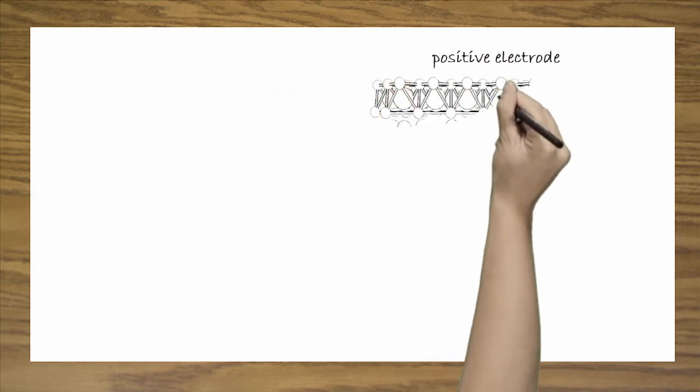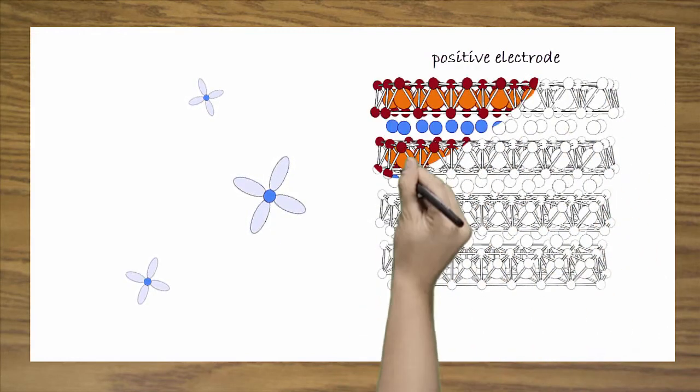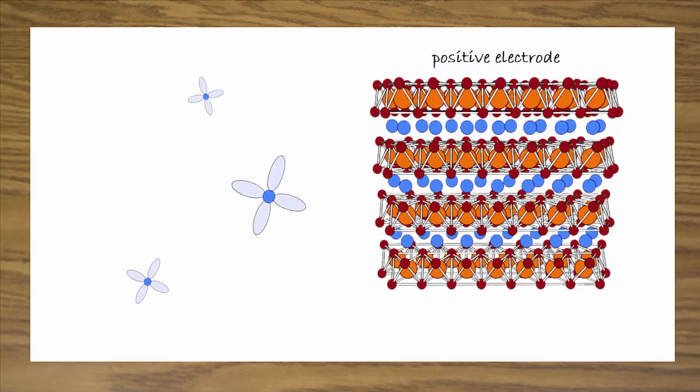Now, what about the interface on the positive? The positive electrode is generally a lithium layered oxide, such as lithium cobalt oxide. The interface at the positive side is kind of a grey area in literature.